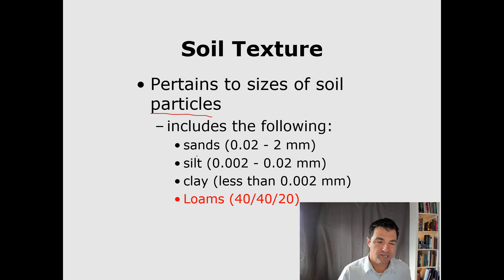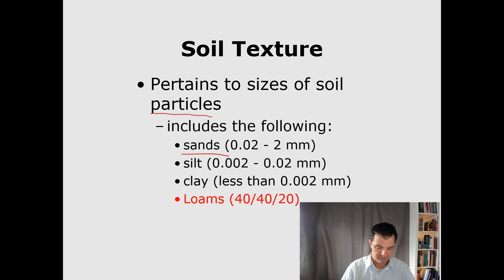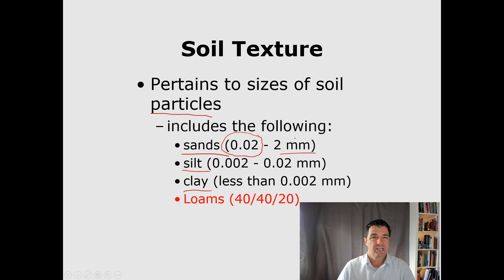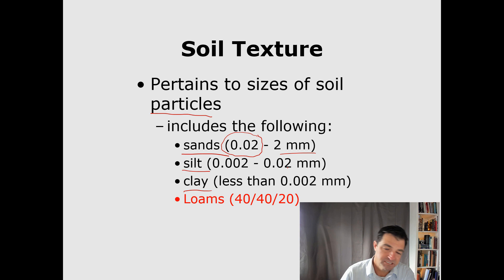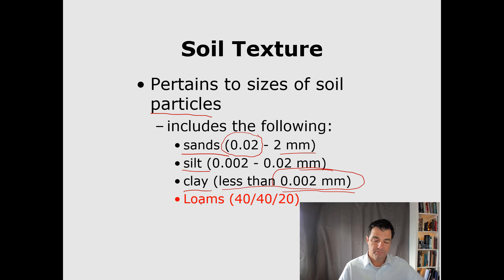One of the ways they break down soil is based on particle size — how big the particles are. We'll talk about three categories: sand, silt, and clay. Sand is usually in the neighborhood of 0.02 to 2 millimeters. A sand grain seems very small, but relative to soil texture, sand is the biggest of the particles.